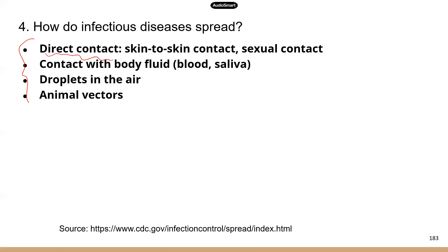Direct contact is a major way for a disease to spread — for example, skin-to-skin contact and sexual contact. Sometimes just by touching a common surface: the CDC website notes that a healthcare provider could touch a contaminated surface, such as contaminated medical equipment, and get pathogens on their hands. If they don't clean their hands, they could transmit the pathogens to patients. So everyone working in healthcare needs to be sure to clean their hands.